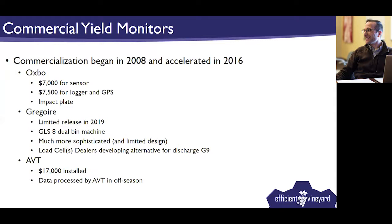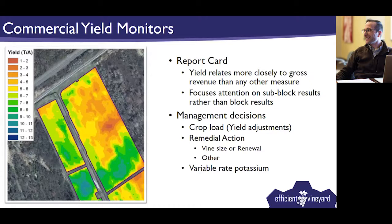One thing yield monitors can do well is give a manager a report card. Very large wineries may not know why a block performs the way it does, and the yield monitor may just be used to determine what's going on in a block and make management decisions around yield — not necessarily for variable rate management. We haven't fully studied the cost-benefit of having that report card, but it's certainly something managers are interested in.